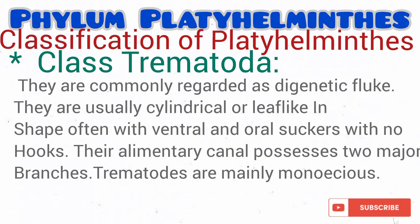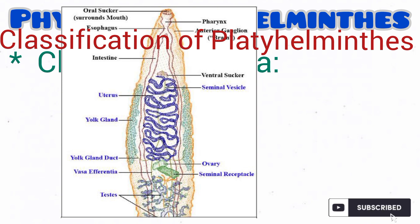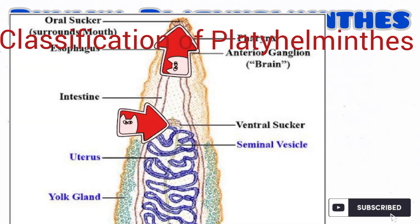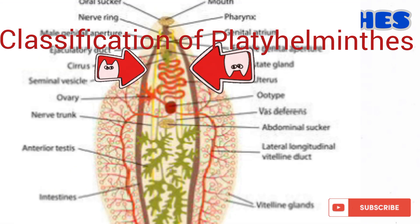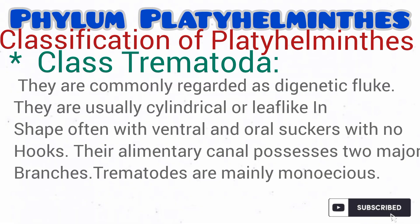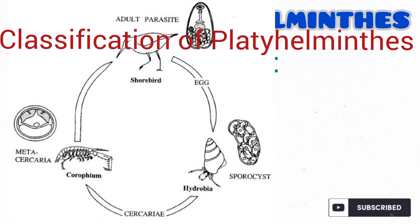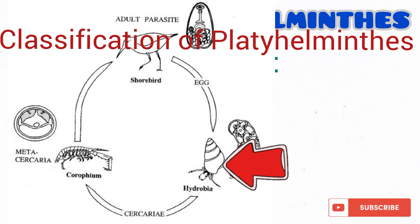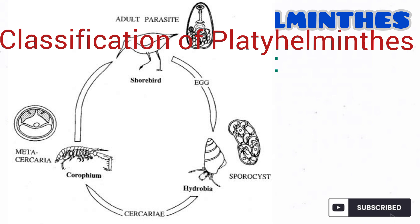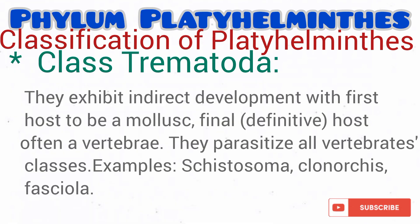Let's talk about the second class, Trematoda. Trematoda are generally regarded as the digenetic flukes. They are usually cylindrical or leaf-like in shape, as you can see from the diagram. They possess ventral and oral suckers; however, the suckers lack hooks. Their alimentary canal, as you can see from the diagram, possesses two main branches. Trematoda are actually hermaphroditic and exhibit indirect development. Their first host is actually a mollusk, and their final or definitive host is often a vertebrate. They are parasites of vertebrates of various classes. Examples of trematodes include Schistosoma, Fasciola, and others.